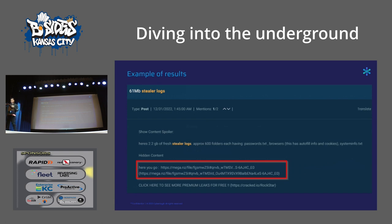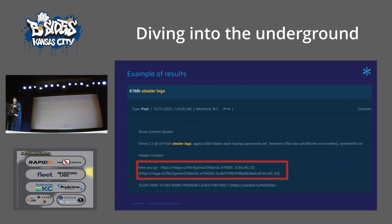Sometimes logs or credentials are hidden behind a link — a file you have to download. This again emphasizes the need to conduct this on a secure environment. Don't do this on your work laptop or personal machine. You need a secure environment because you will find examples where you need to download a file to extract the intel or threats targeting your organization. In this example there was a stealer log file — two gigabytes worth — containing intel not only for Racetrack but other organizations as well.